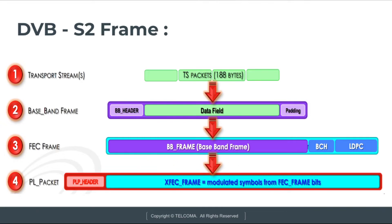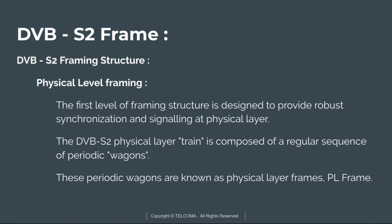Let's discuss physical level framing. The first level of framing structure is designed to provide bus synchronization and signaling at the physical layer. The DVB-S2 physical layer train is composed of a regular sequence of periodic wagons. Within a wagon, the modulation and coding scheme is homogeneous but may change in adjacent wagons, meaning it may consist of variable coding and modulation techniques. These periodic wagons are known as physical layer frames, or PL frames.